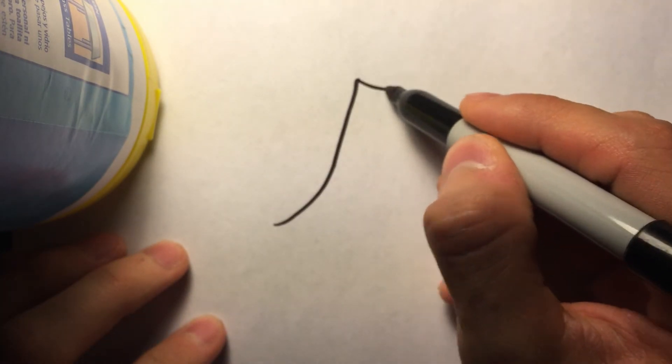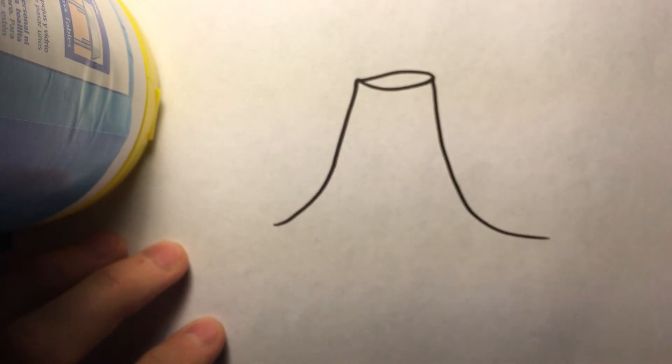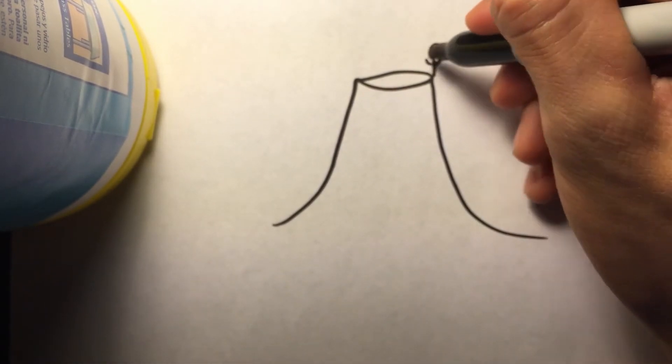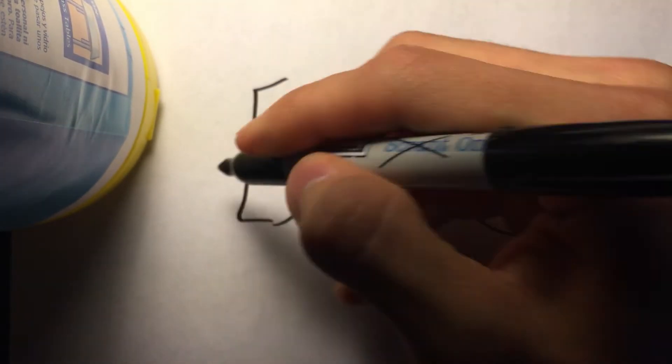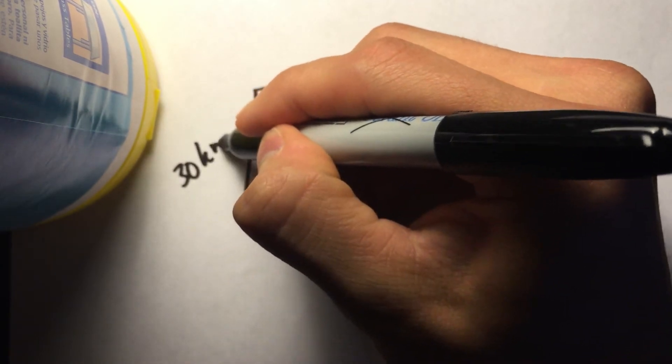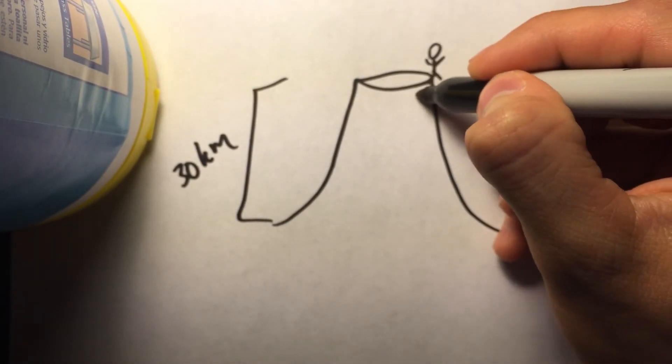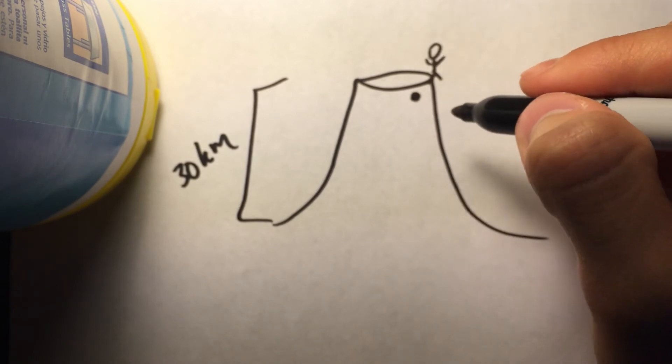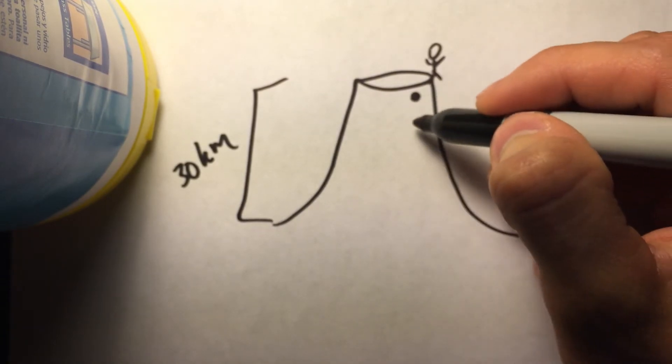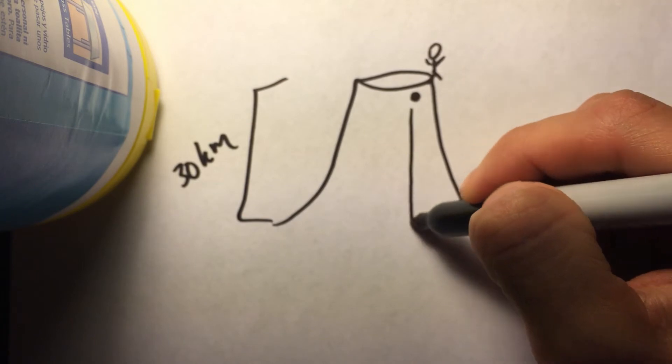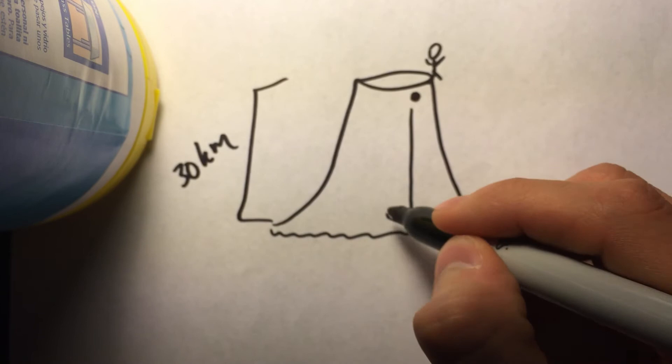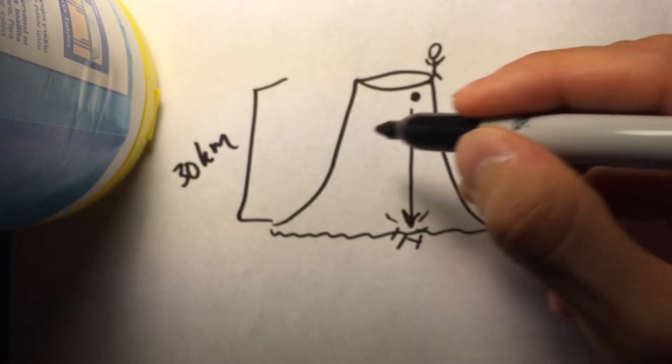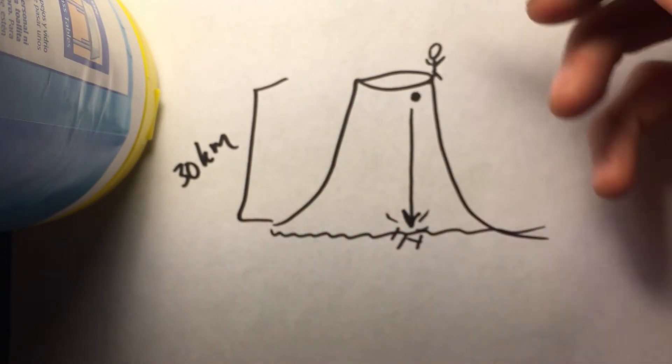So first of all, we want to draw a little volcano. Something like that, right? So we have a little astronaut on the top. Obviously, this is not drawn to scale. Our volcano is 30 kilometers tall, and we have a little astronaut that drops the ball, and this ball is going to hit the crater floor. And we know our distance is going to be 30 kilometers, because that's what the problem told us.